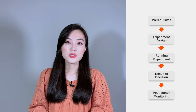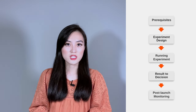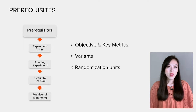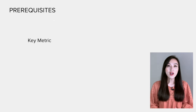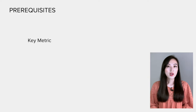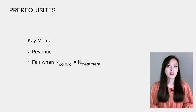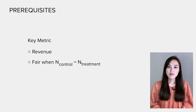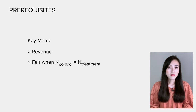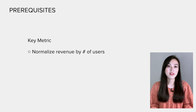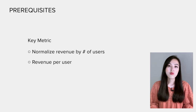Let's follow the diagram to see what ingredients are needed to run this experiment. Before running it, we need to be clear on the objective and key metrics, the variants, and the randomization unit. First, let's choose a metric to reflect our goal. Since we're interested in measuring the difference in revenue due to the new similar products feature, one good metric is revenue. To ensure a fair comparison, we normalize revenue by the number of users in each group, so the metric is revenue per user.